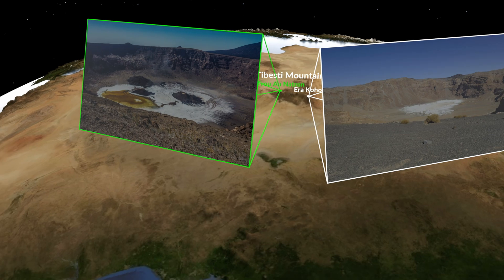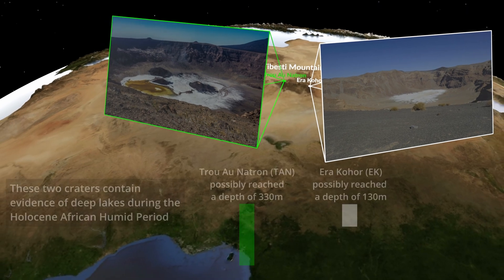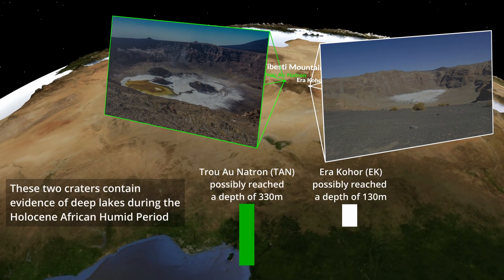Trou au Natron possibly reached depths of up to 330 metres, and Emi Koussi up to 130 metres. Although global models show more rainfall over the Tibesti region, they still don't show nearly enough to maintain deep lakes. Could a high-resolution simulation help explain how these lakes existed, and perhaps even reveal why the lakes had such different depths?